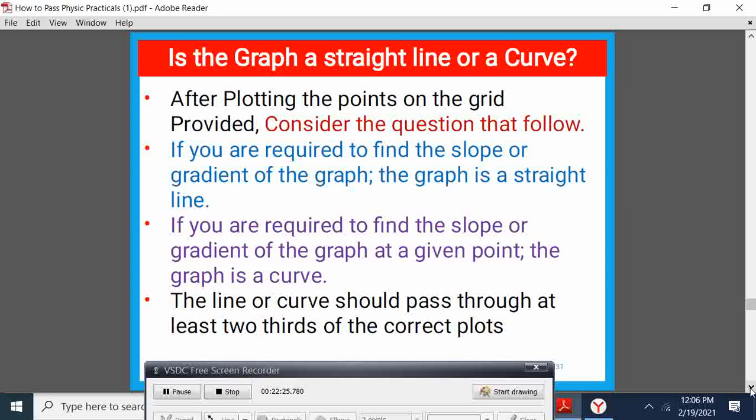Now, sometimes, once you obtain the quantities or the data, we do not know whether it is going to be a graph or a curve. So, for you to know whether your graph is a line, a straight line or a curve, consider the equation that you follow after the table. If the equation is find the slope or the gradient of the graph, then the graph is a straight line. You are finding a slope or the gradient, the graph is automatically a straight line. But if you are supposed to find a slope at a given point, that is a curve. So, the equation will guide you.